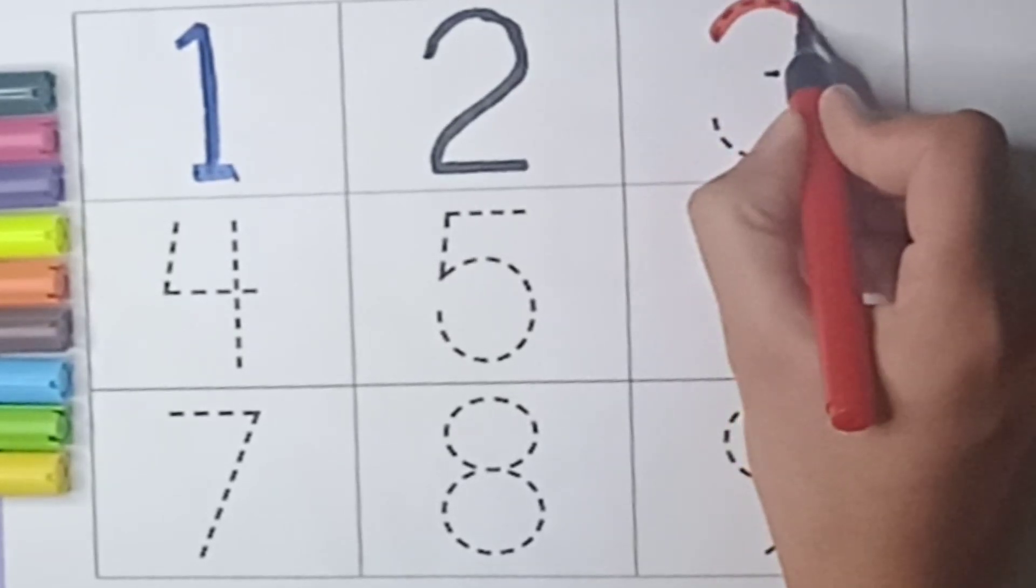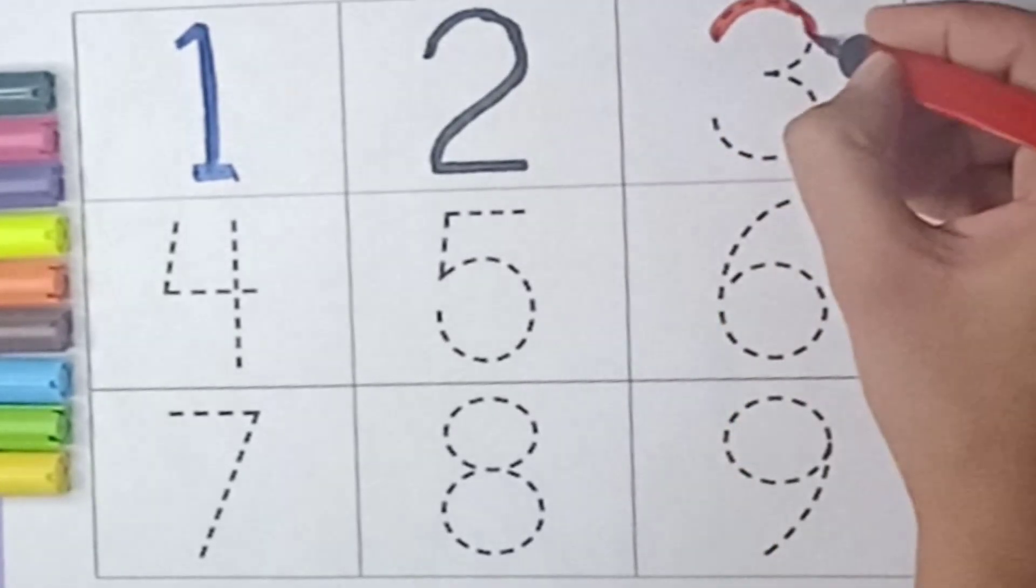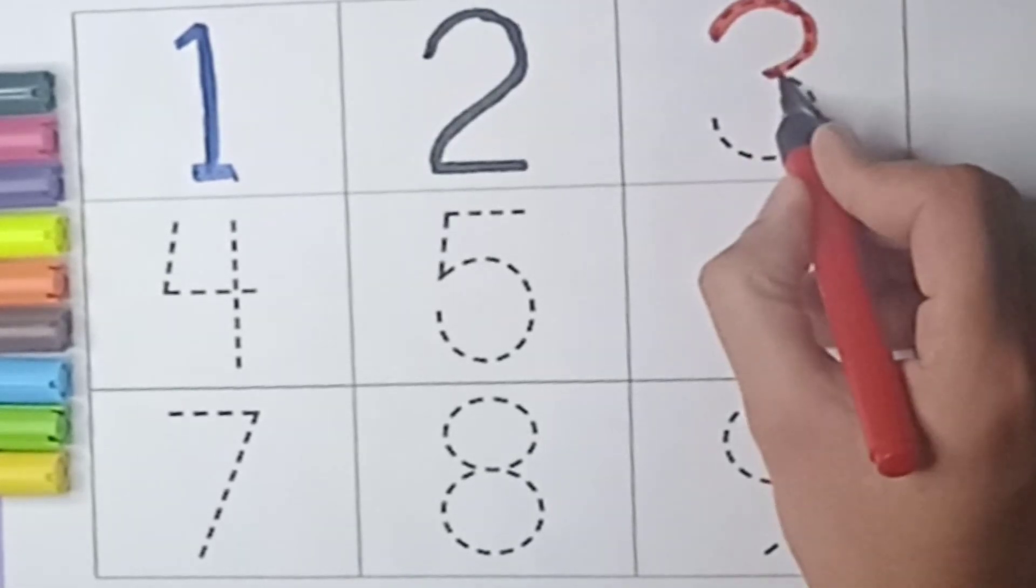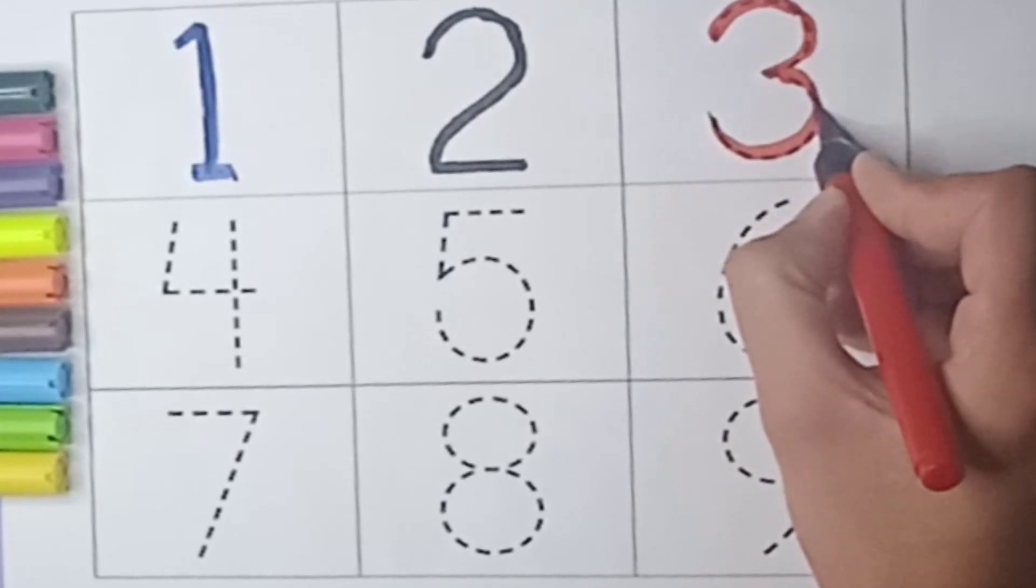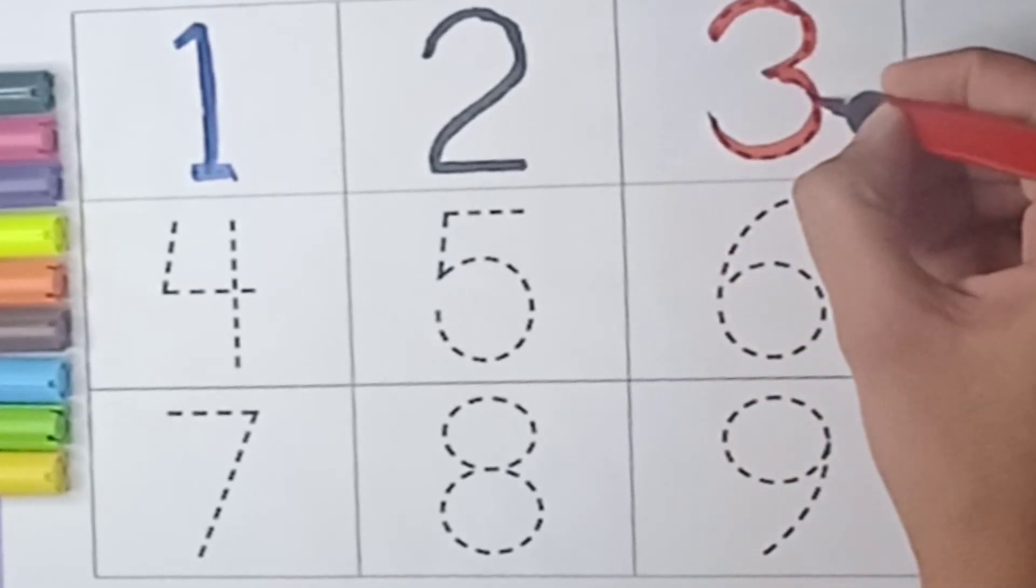Now come on, number 3. It's red color. First we will make a curve just like this, one more curve like this. Now it's a 3, red color 3.